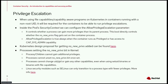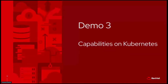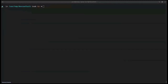When using file capabilities or capability-aware programs on Kubernetes, containers need to be able to perform privilege escalations, because a non-root process needs to become a more privileged process to acquire capabilities. You have more detailed information about this in the slide. Now let's see how we can configure capabilities on Kubernetes and the differences from running those containers locally.